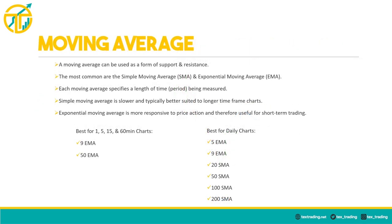Moving averages are another popular indicator that can be used as a form of support and resistance or for targets on trade ideas. The most common are the simple moving average (SMA) and the exponential moving average (EMA). A simple moving average is slower and typically better suited to longer time frame charts; an exponential moving average is more responsive to price action and therefore useful for short-term trading. I recommend the 9 EMA and the 50 EMA for any time frame between 1 to 60 minutes. The 9 EMA on a 5-minute time frame is a very powerful indicator that I use every day.